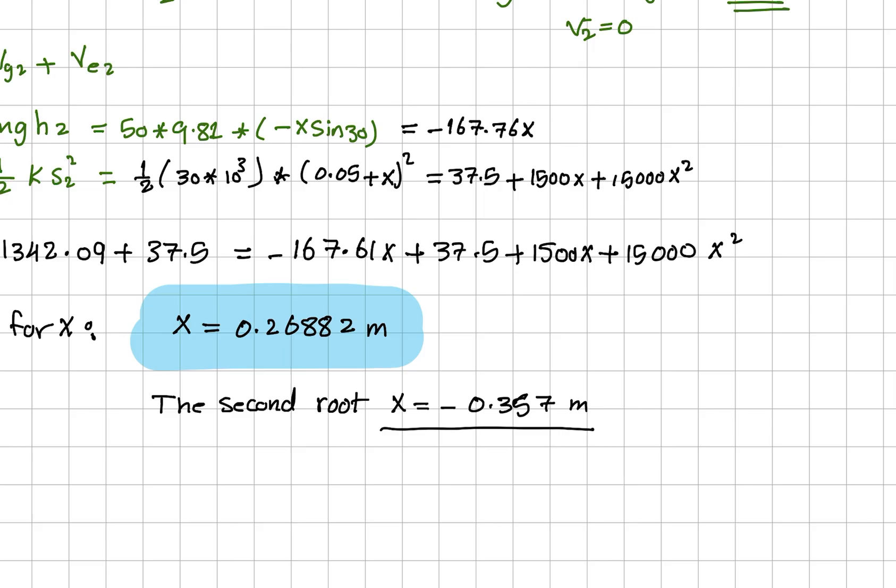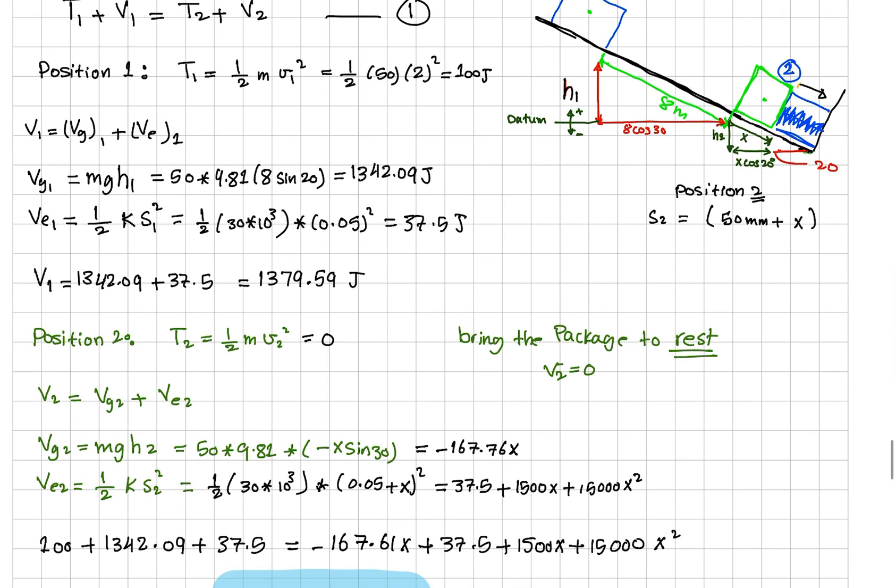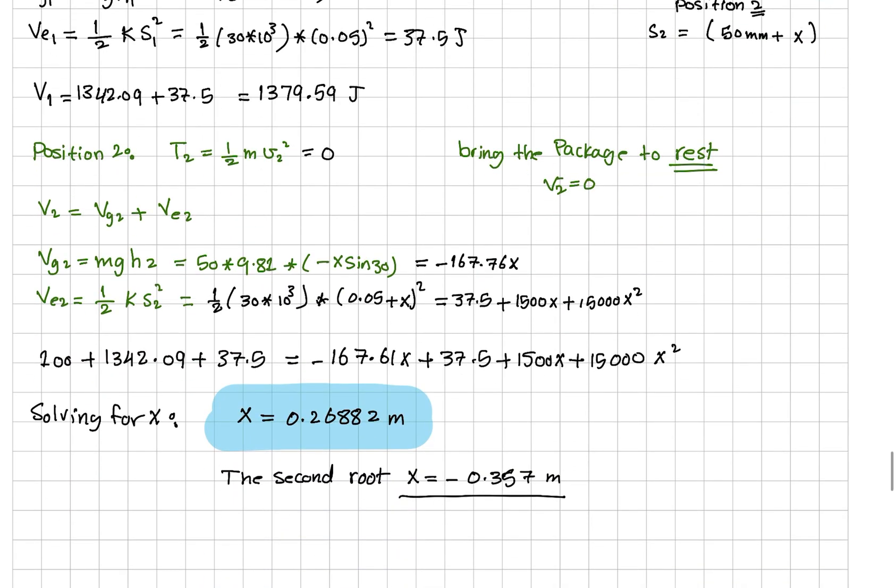So this negative one does not have any physical meaning. However, it means that the spring would have to be extended by an amount of 0.2357 meters to stop the block at position 2. So this would be like if we extend the spring by this displacement, the force that the spring will generate would be enough to stop the block. So this doesn't have any physical meaning, so this is neglected. Thank you.